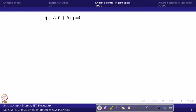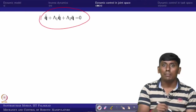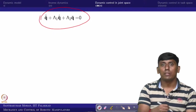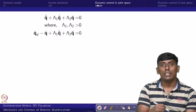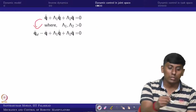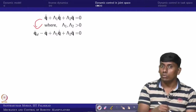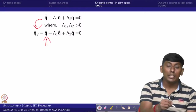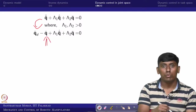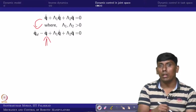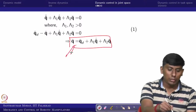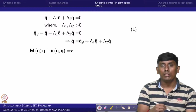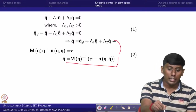We can take the second-order error dynamics in this form, where lambda-1 and lambda-2 are positive constants — in this case matrices. We expand q-tilde-double-dot as q-double-dot-desired minus q-double-dot. This q-double-dot we know from the equation of motion, and q-double-dot-desired is available from the trajectory planner. We can equate these two to find the control law.